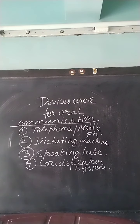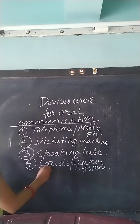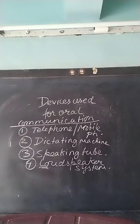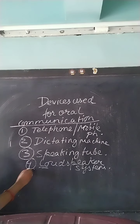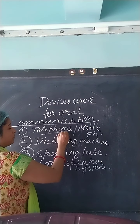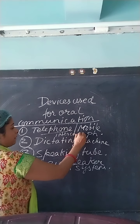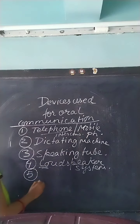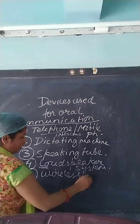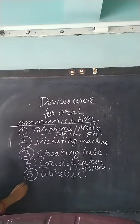A loudspeaker system ensures that a mass gathering can be notified within a very short span of time. We use this kind of communication device. Apart from this, we also use the house telephone, which can also be called an intercom. Wireless phones or walkie-talkies are also used.